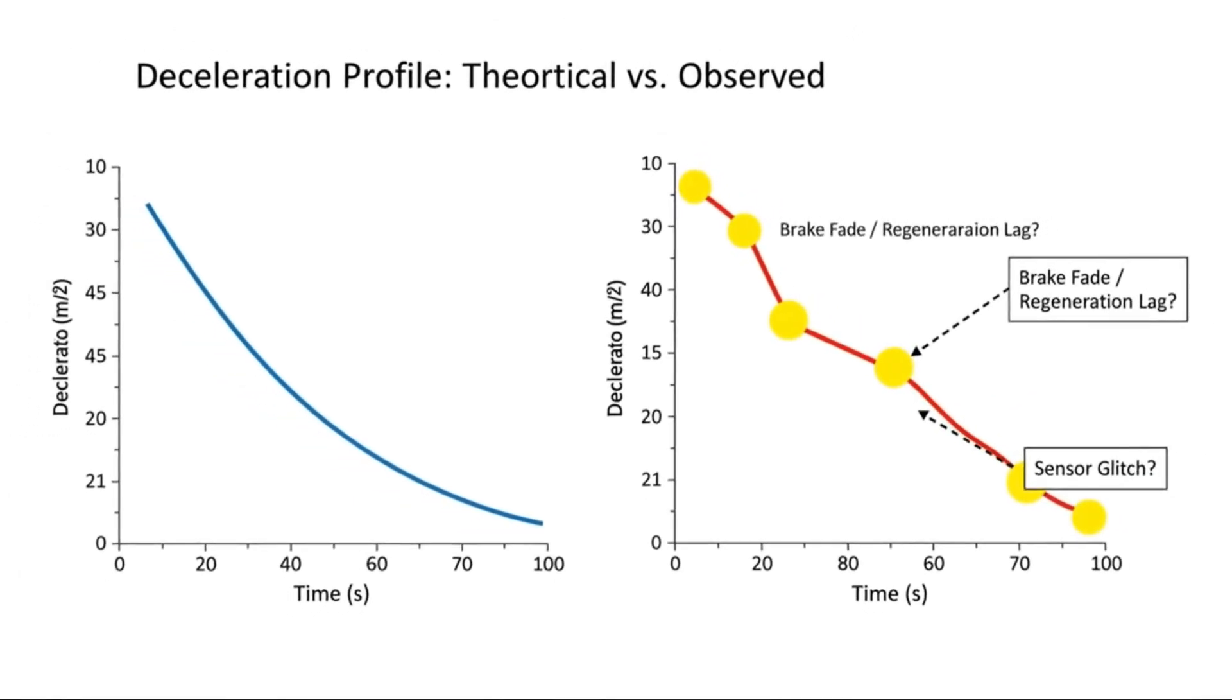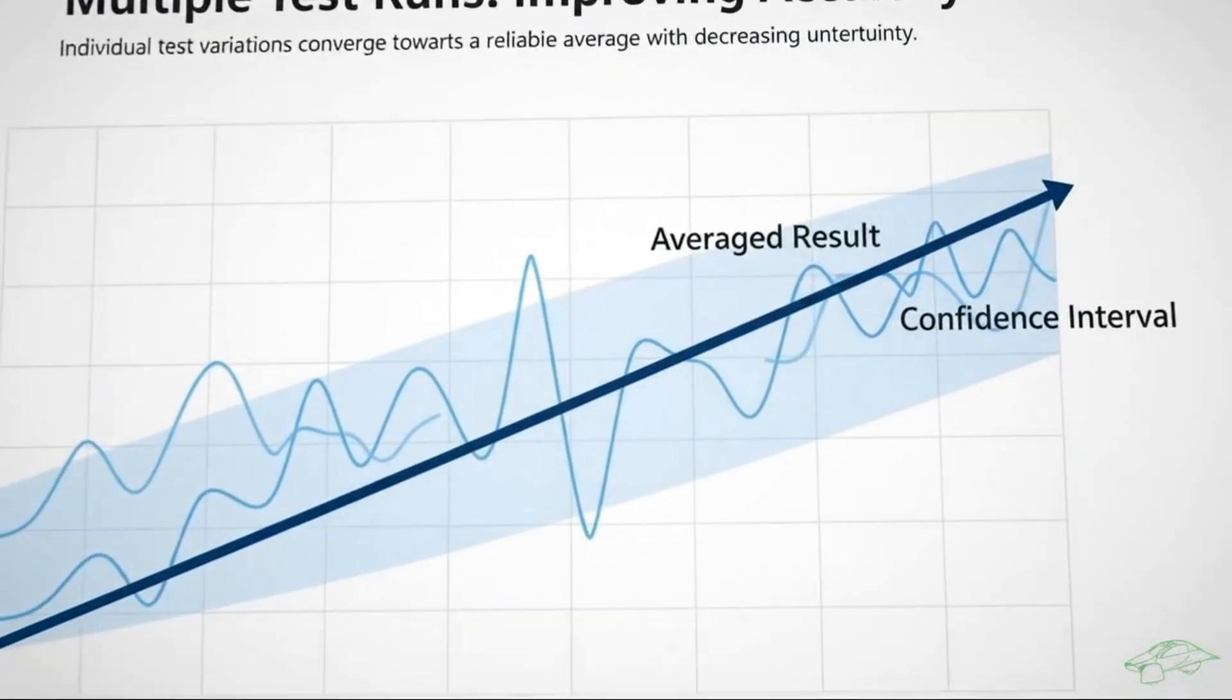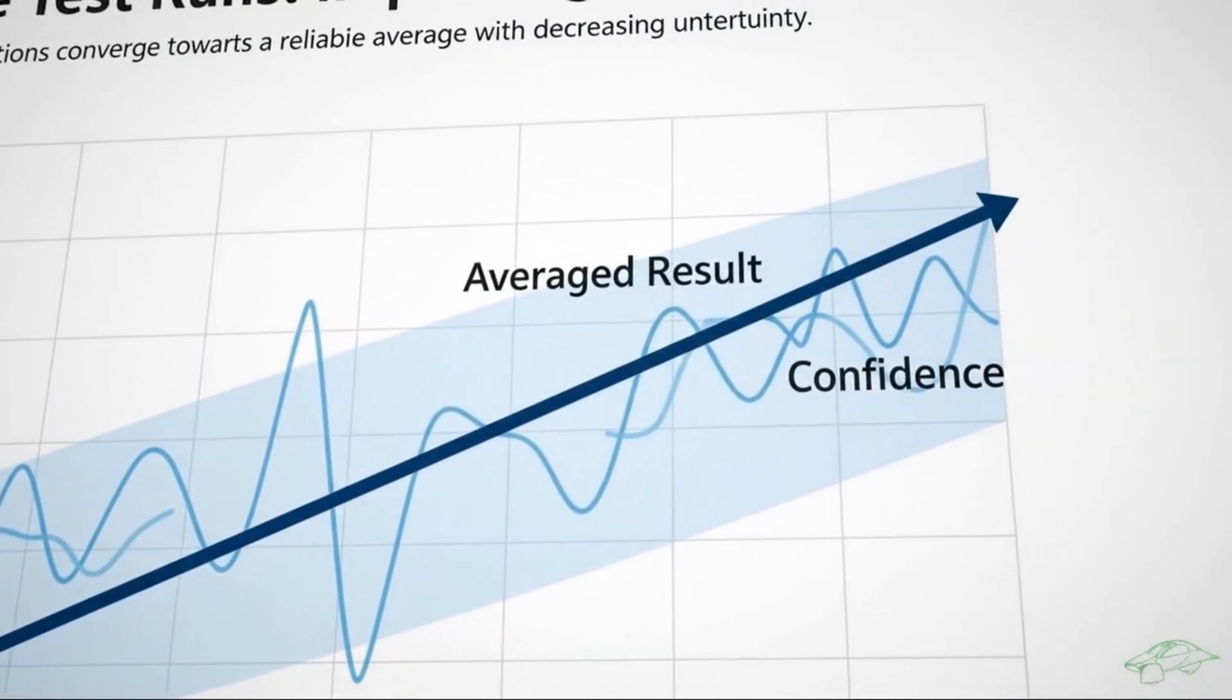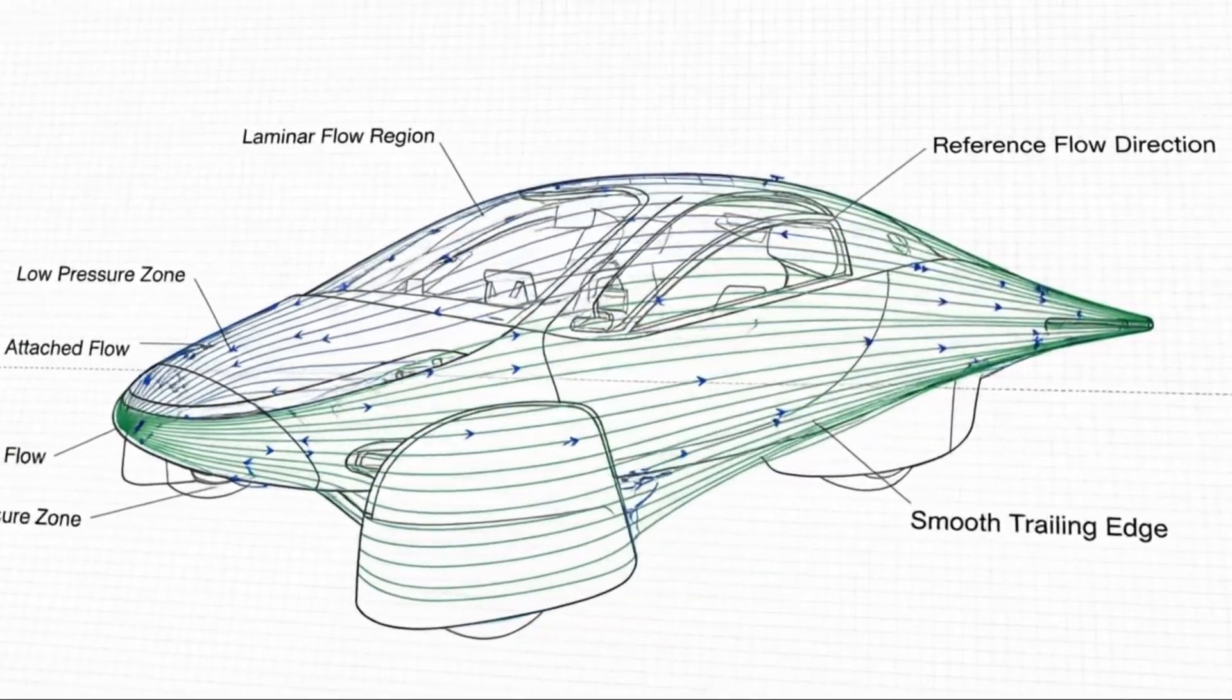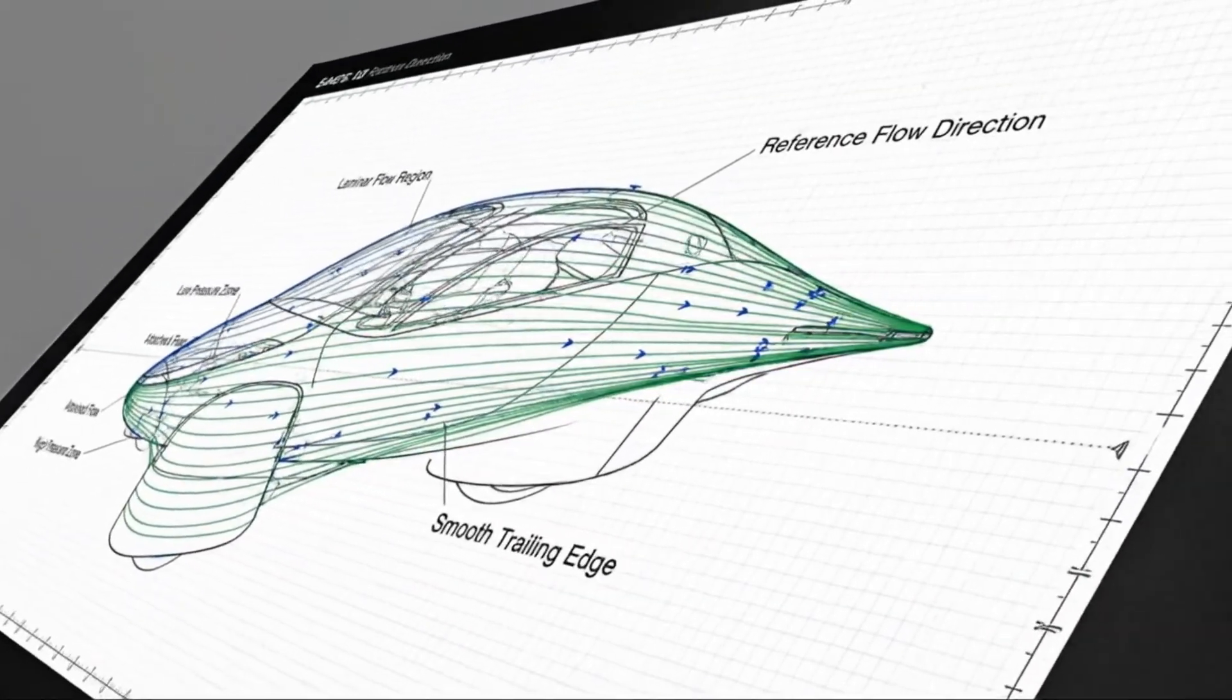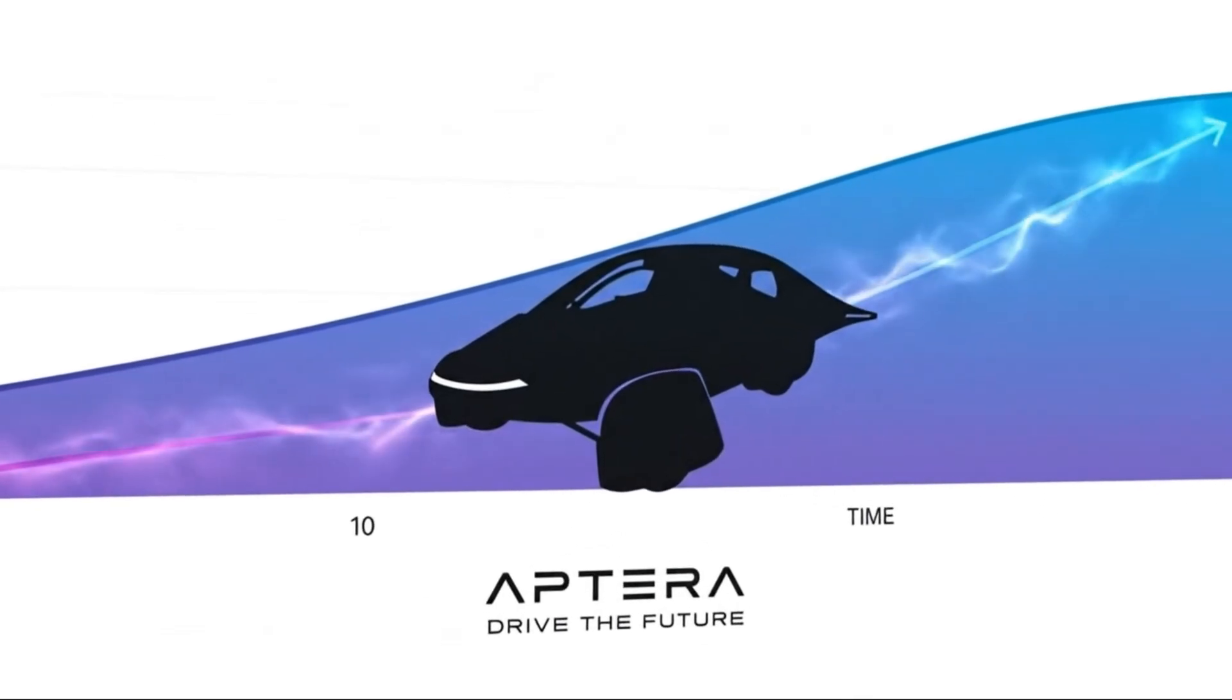Range calculation itself is refreshingly straightforward. Battery capacity divided by energy consumption determines how far the vehicle can go. When consumption is low enough, even modest batteries deliver extraordinary distances. Real-world testing has confirmed that these calculations aren't theoretical. They translate directly to observed performance.